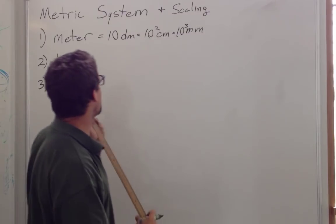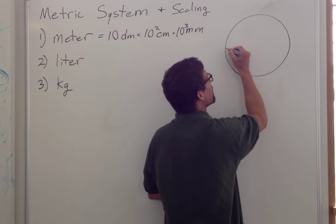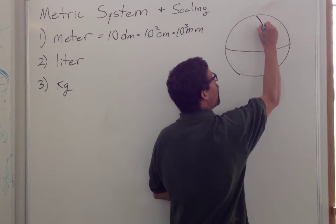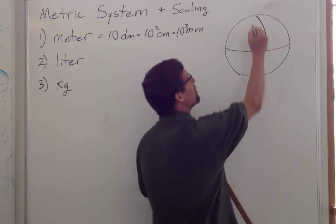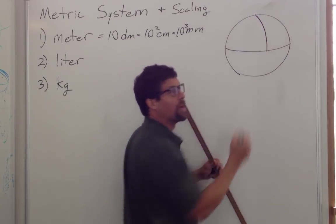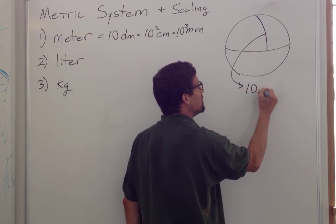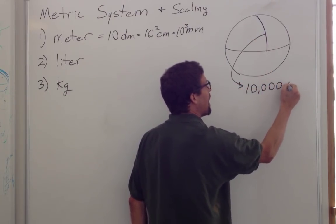So where did the meter come from? Originally, when we look at the Earth, we define the meter as one ten millionth the distance from the North Pole to the equator along the meridian. So this distance was defined as 10,000 kilometers.